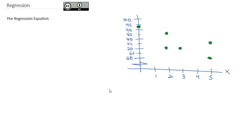Once we have a scatter plot of all the dots, we are often interested in the trend of the data and what direction it's going. What we really want to do is draw a line that goes through the data that approximates the data as best as possible. This line can be thought of as the line of best fit.